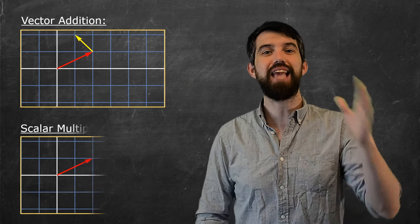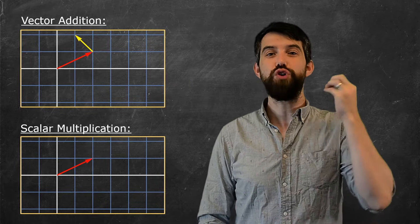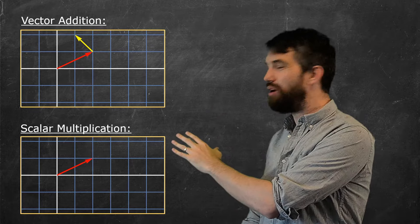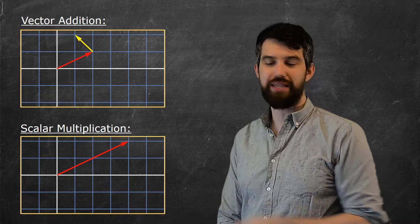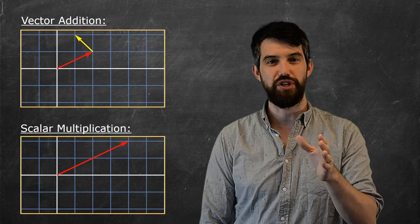And the second of them was scalar multiplication, which says that if you've got one vector, you can go and multiply its length by a scalar. Say, for example, you could multiply it by a factor of 2.